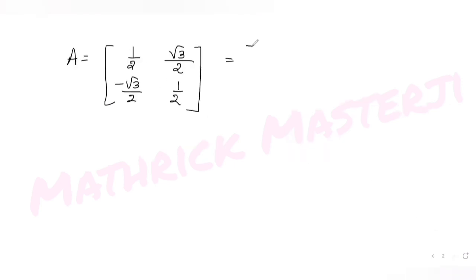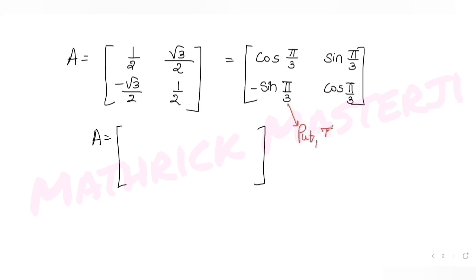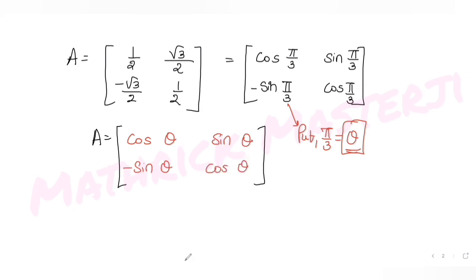I can write these elements in terms of cos and sine. One-half is cos(π/3), √3/2 is sin(π/3), -√3/2 is -sin(π/3), and one-half is again cos(π/3). So substituting θ = π/3, the matrix A becomes: [[cos θ, sin θ], [-sin θ, cos θ]].